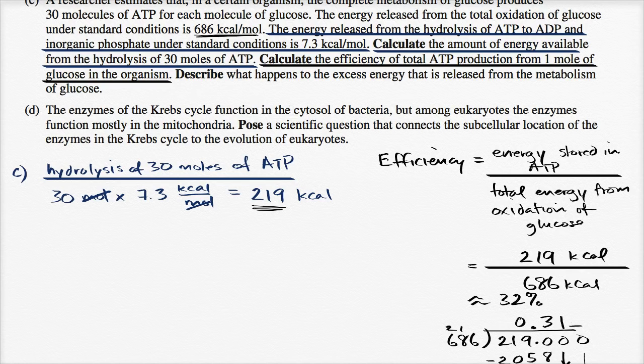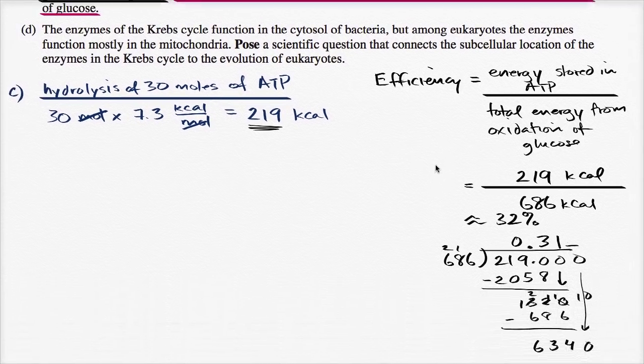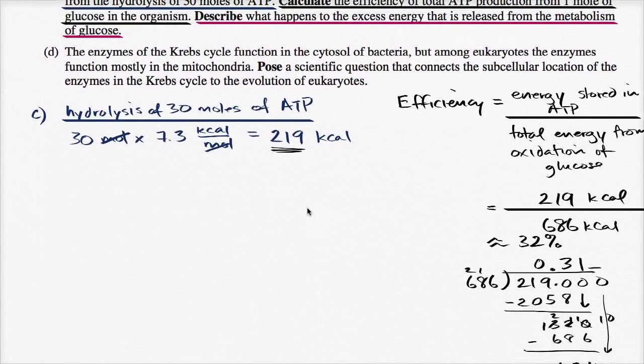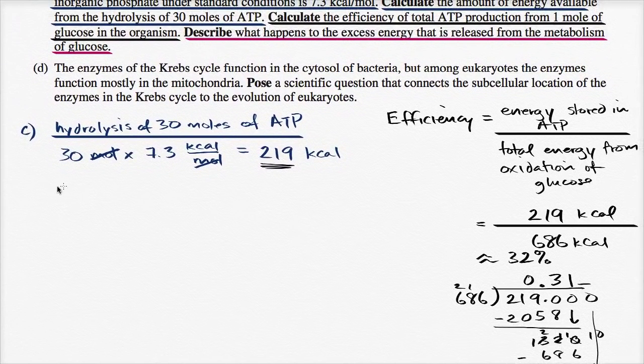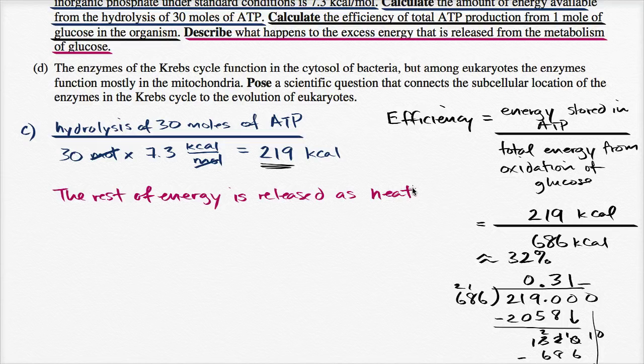Now they say, describe what happens to the excess energy that is released from the metabolism of glucose. What happens to the other 68% of the energy? The rest of the energy is released as heat.